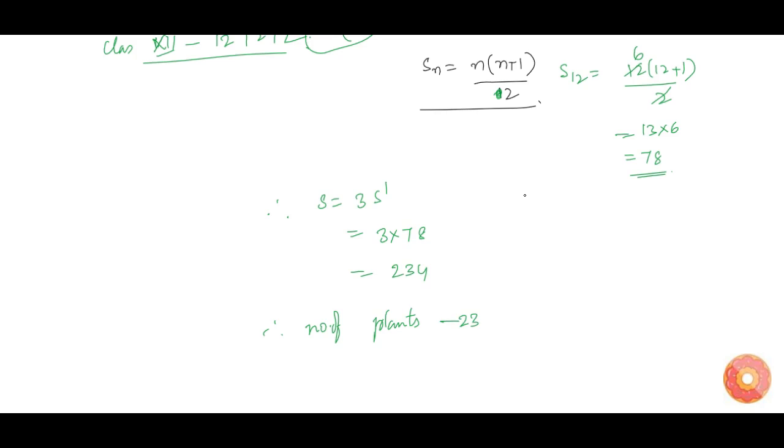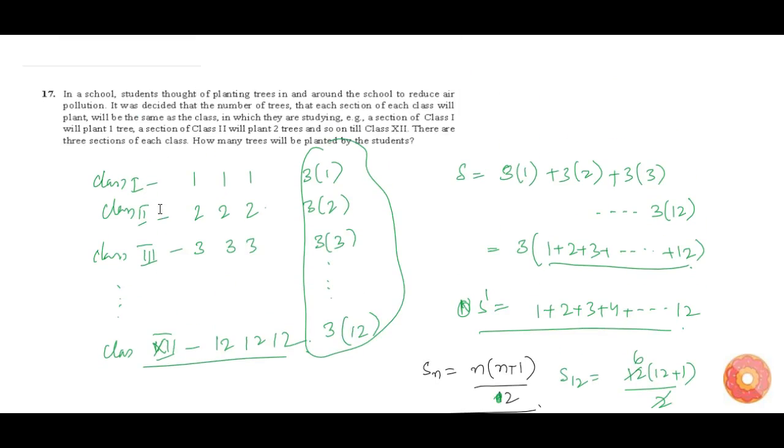This is nothing but a real-life example of arithmetic progression. We just need to understand that actually these numbers—3, 6, 9, and so on till 36—form an AP.